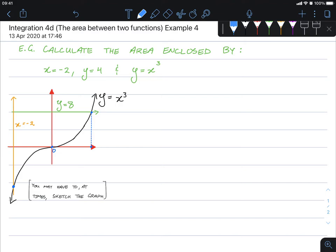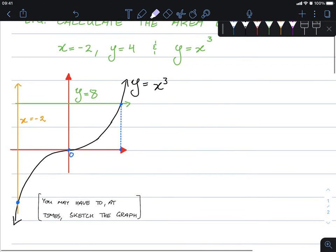Let's calculate the area enclosed by x equals negative 2, so this vertical line here, y equals 4, so this horizontal line here, and the cubic y equals x cubed. So if you can visualize the area we need to calculate, it's actually this area here.